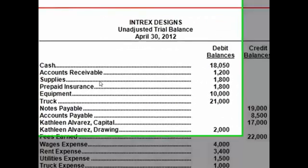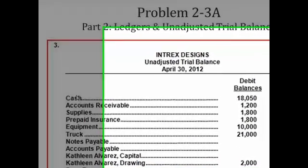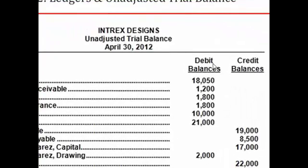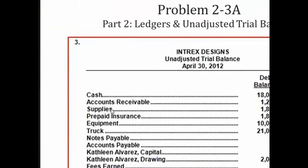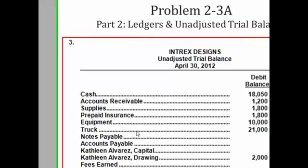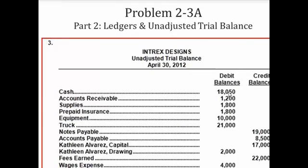Once you are finished recording the ledgers, you take the ending balances and apply them to the normal debit or credit column they belong in. Cash, accounts receivable, supplies, prepaid insurance, equipment, and truck are all assets with a normal debit balance, so we pull this information directly from the ledgers: $18,050 for cash, $1,200 for accounts receivable, $1,800 for supplies, $1,800 for prepaid insurance, $10,000 for equipment, and $21,000 for truck — applied to the debit column.